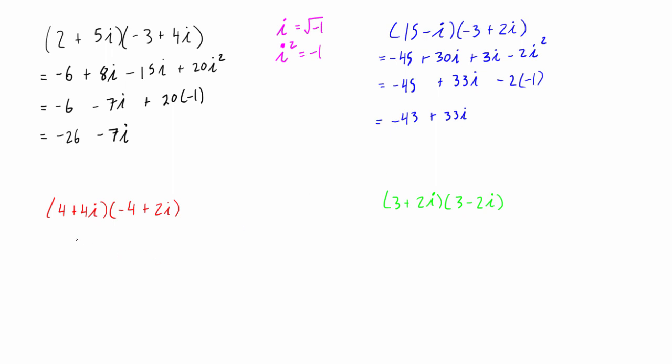Alright, let's move on and do this other example down here. So we have 4 times negative 4, that is negative 16. 4 times 2i, that is plus 8i. And then here we have 4i times negative 4, so that's minus 16i. And then plus 8i squared. So let's clean this up.